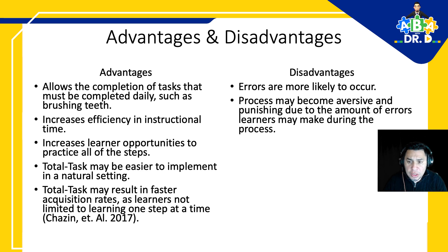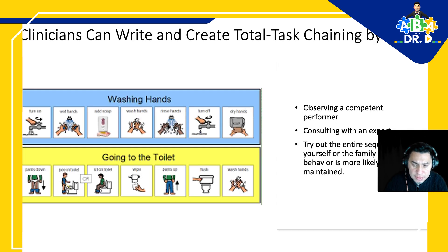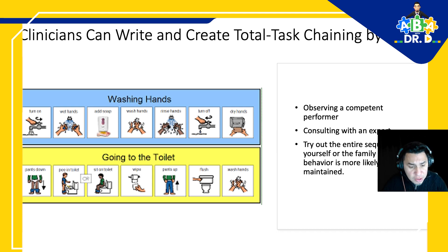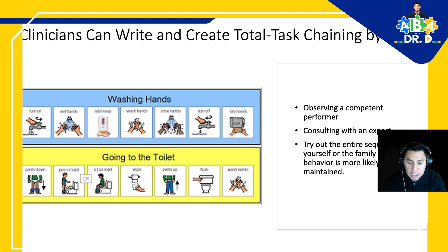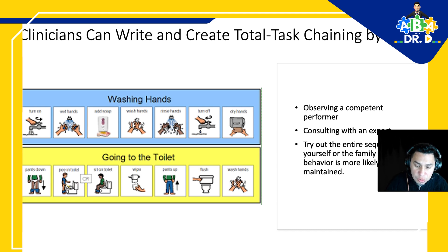How do clinicians come up with a total task analysis? Number one, observe a competent performer — someone really good at doing these things. Next is consulting with an expert who can explain step by step what the process is. I also want to add consulting with caregivers or family members who interact with the client daily. For example, when rinsing after brushing teeth, some use their hands versus a cup — that right there is already a difference.